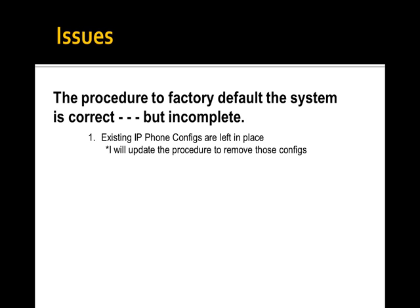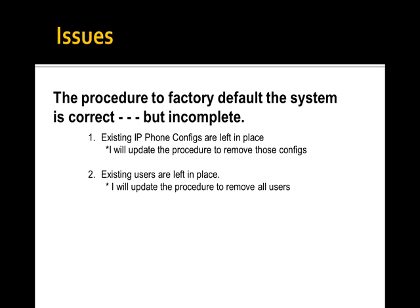That isn't even a big problem except that I set this up for you to add a phone — and now you can't add a phone because it's going to error out. What I'll do is change the procedure to update those IP phone configs. You may have noticed in the command line a file called 'dyne-voice-dash-startup' — that's actually where the IP phone configs live. Think of that file as a file of files. We'll have to blow that away. I thought that happened in the factory default procedure, but it doesn't.